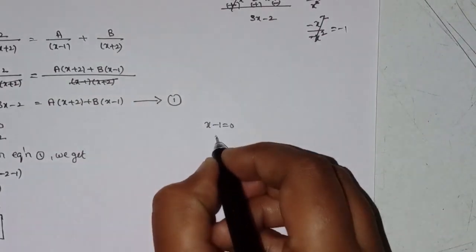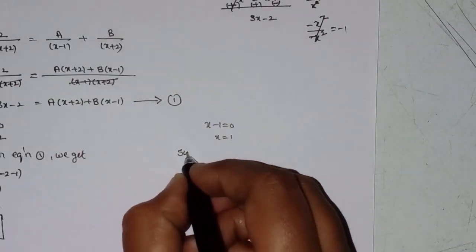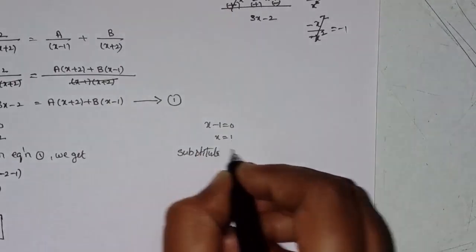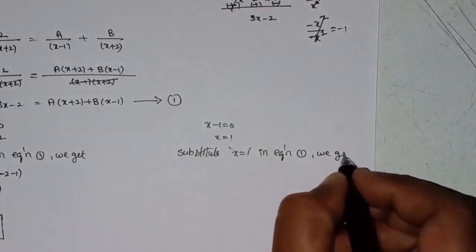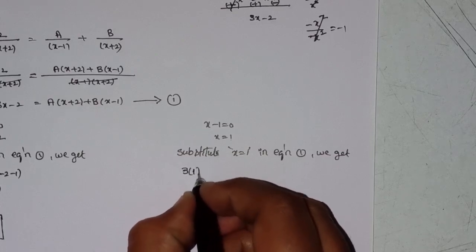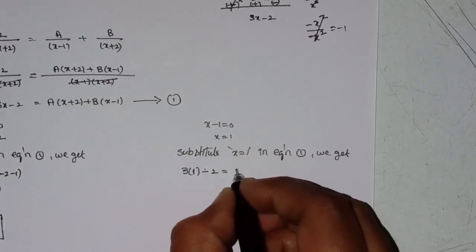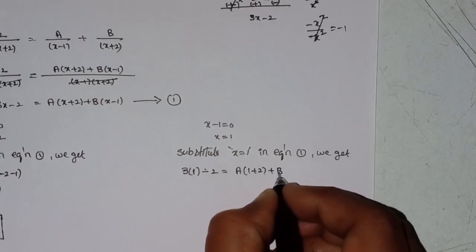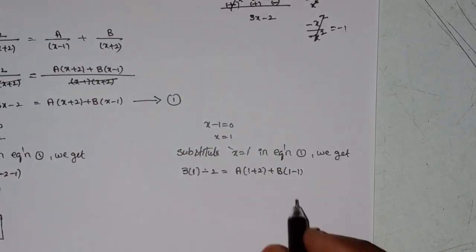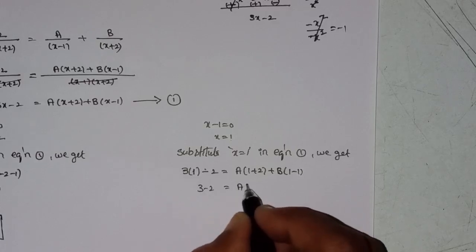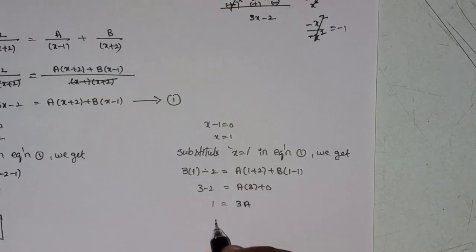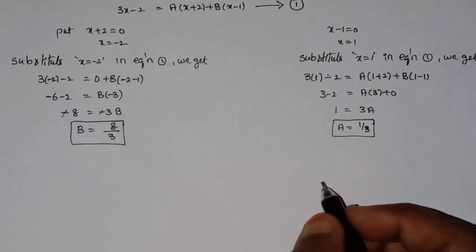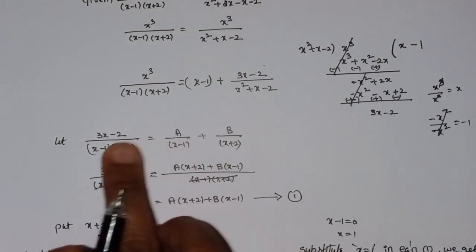Next, put x minus 1 equal to 0, so x equals 1. Substitute x equals 1 into Equation 1. We get a equals 1 by 3. So this gives us our A and B values.